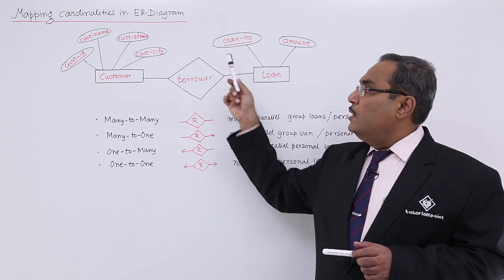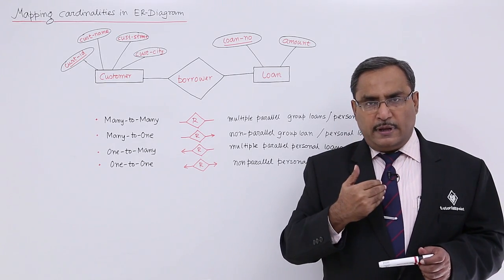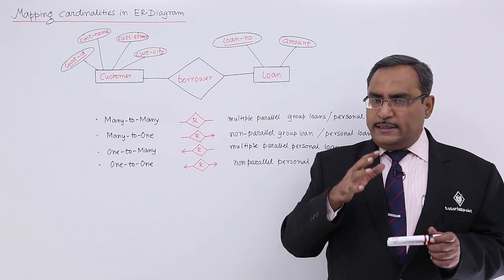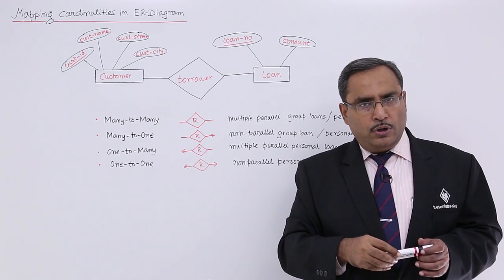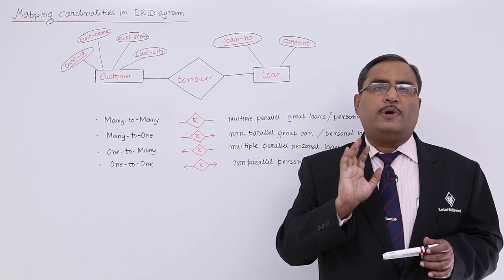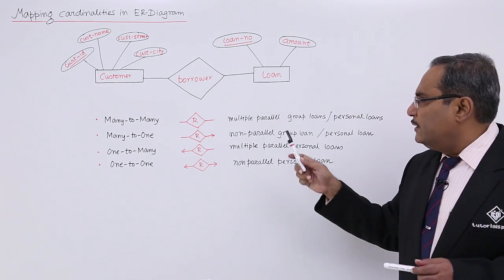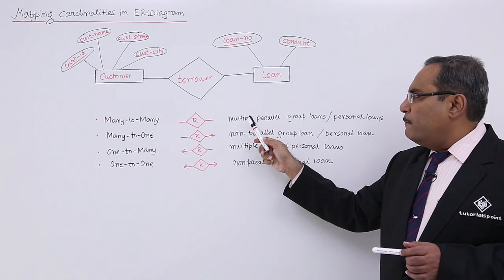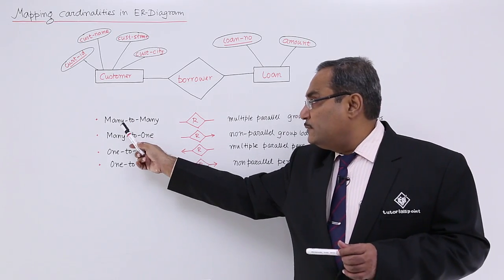But this side is also 'many', meaning against one Loan Number we have multiple Customer IDs. For example, in case of a business loan, suppose two people decide to take one loan together — that would be called a group loan. So, a group loan means against one loan number, there will be multiple customer IDs. This particular bank, in the many-to-many case, issues multiple parallel group loans or personal loans.